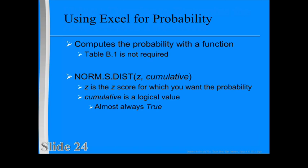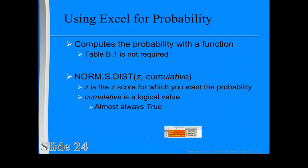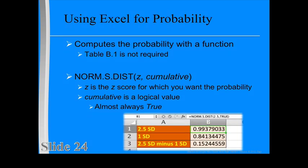Here is the same problem we worked through previously. We have 2.5 standard deviations above the norm, and one standard deviation above the norm. We calculate that probability using Excel, and then we simply subtract one from the other. The result is the same.